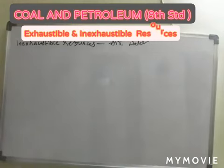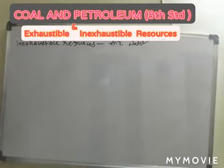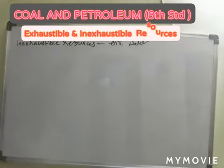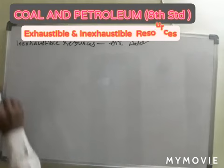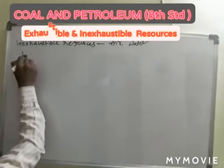Some energy sources, like petrol or coal, will exhaust on usage. Once we use them completely, they are gone. So all such sources are named Exhaustible Sources.